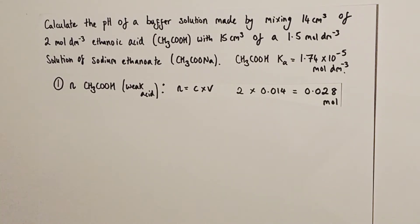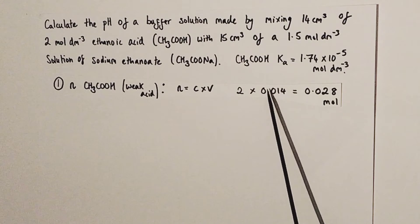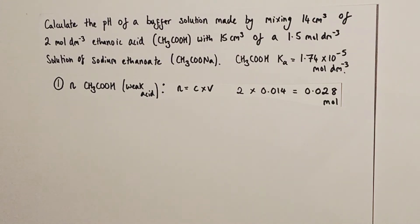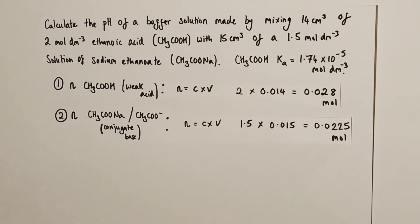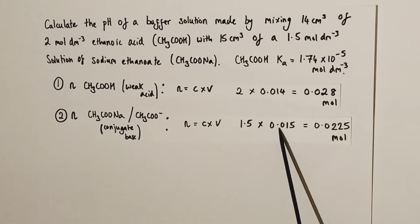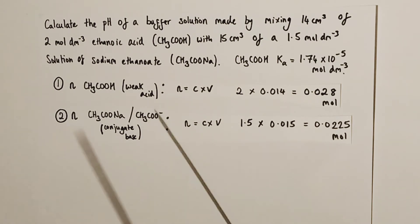The first step is to work out the moles of weak acid present — in this case ethanoic acid. Moles equals concentration times volume in litres: 2 × 0.014 = 0.028 moles of ethanoic acid. Next, we work out the moles of conjugate base contributed by the salt. Moles equals 1.5 × 0.015 = 0.0225 moles of ethanoate ions (conjugate base) present in the buffer solution.